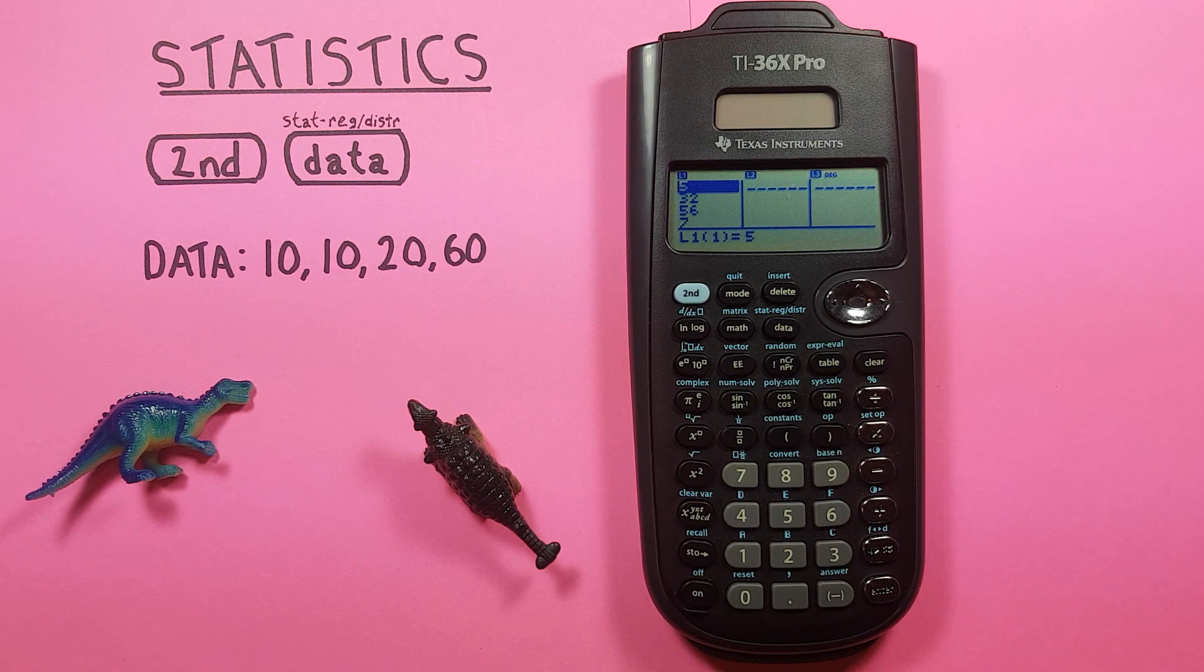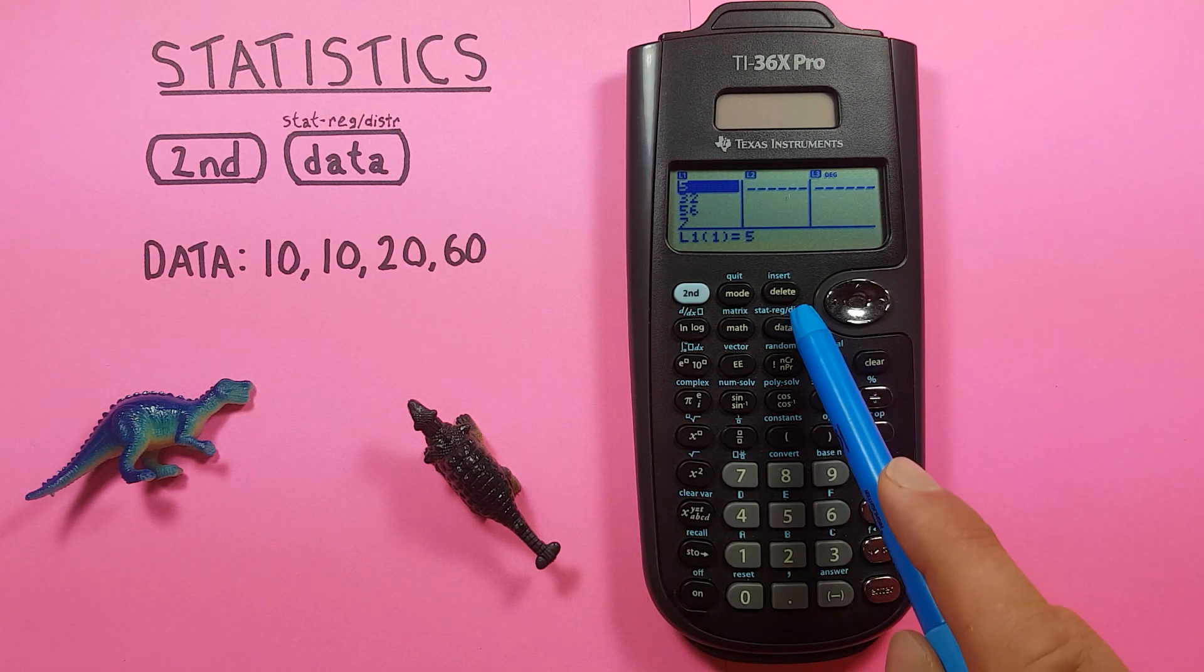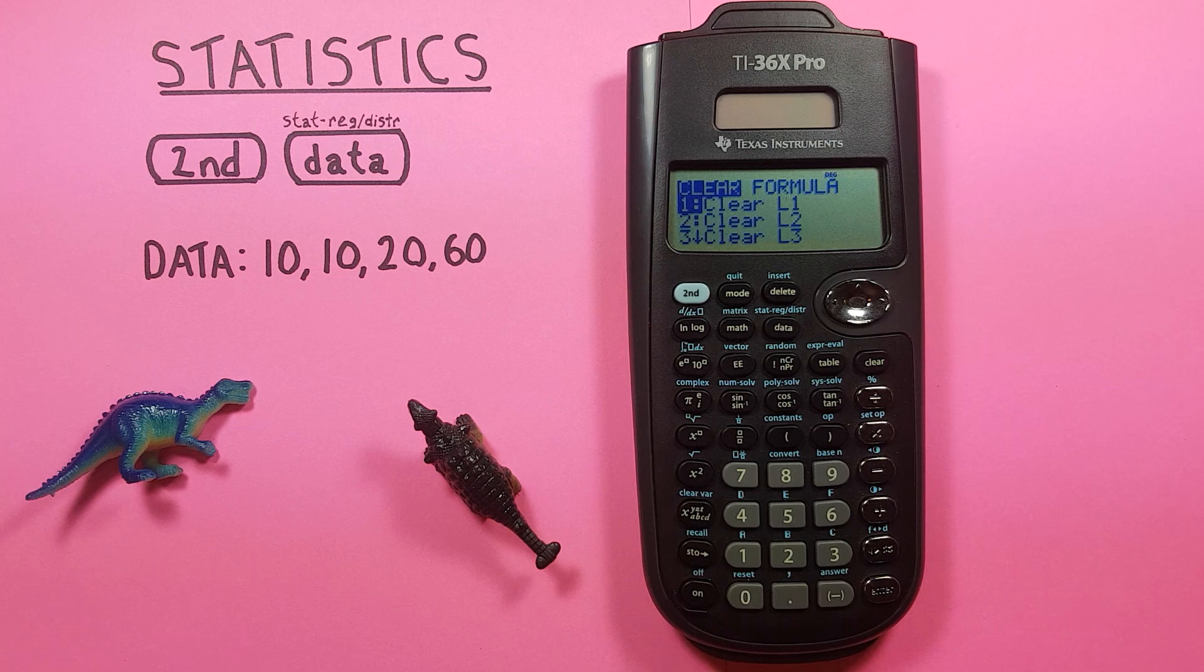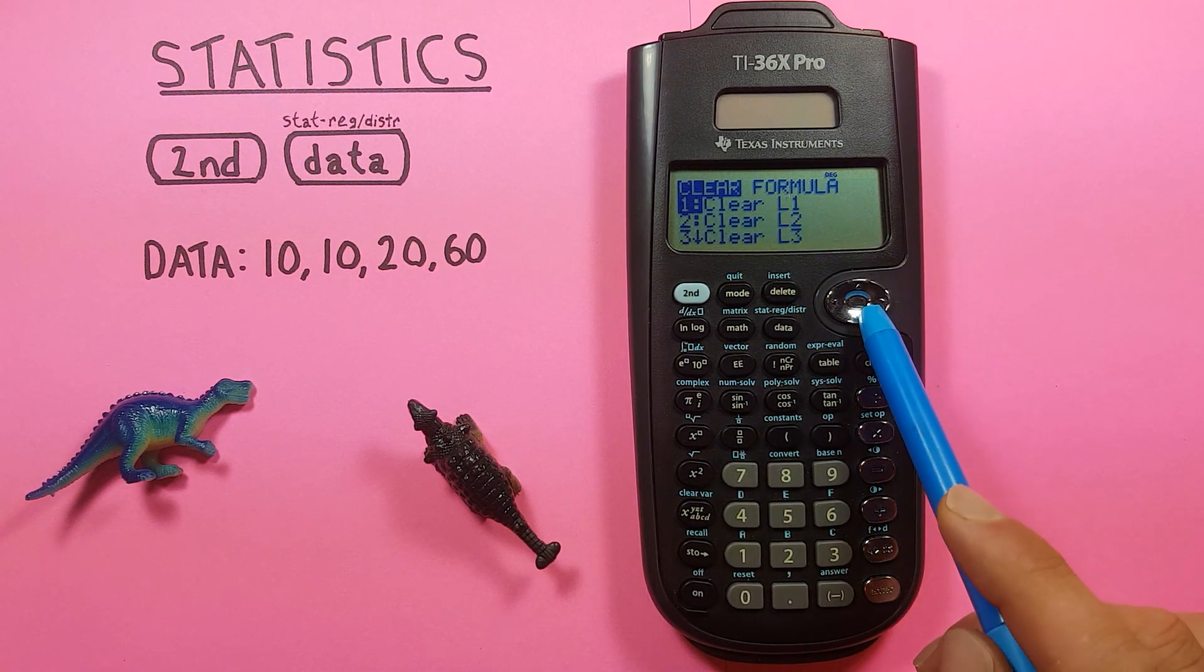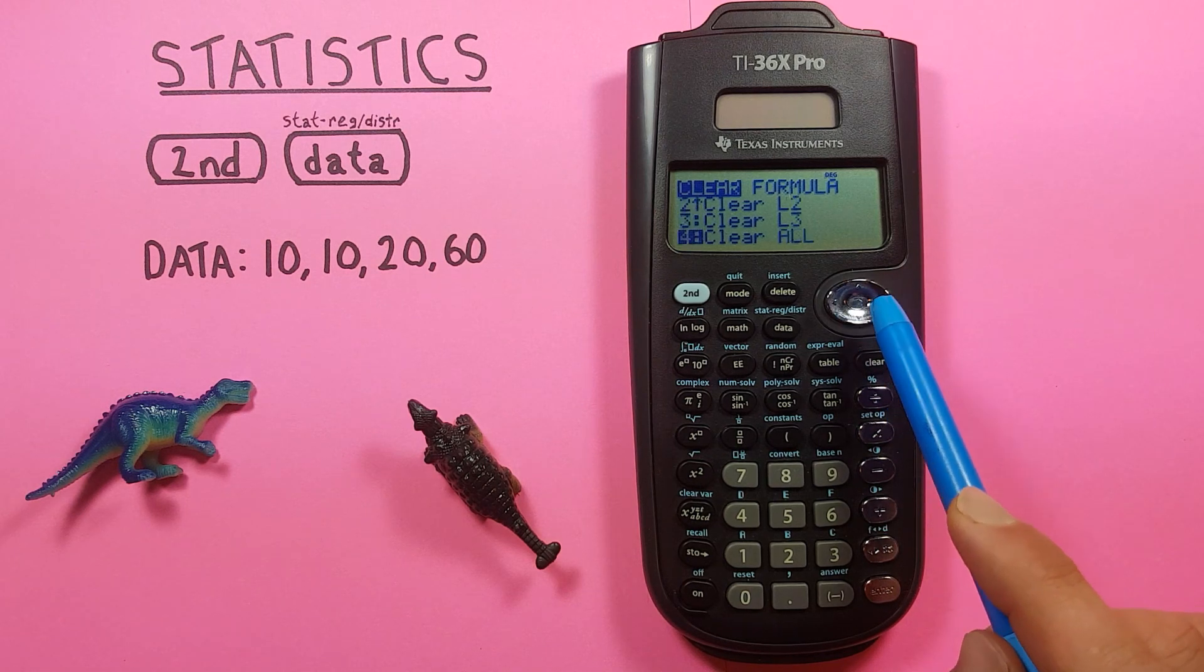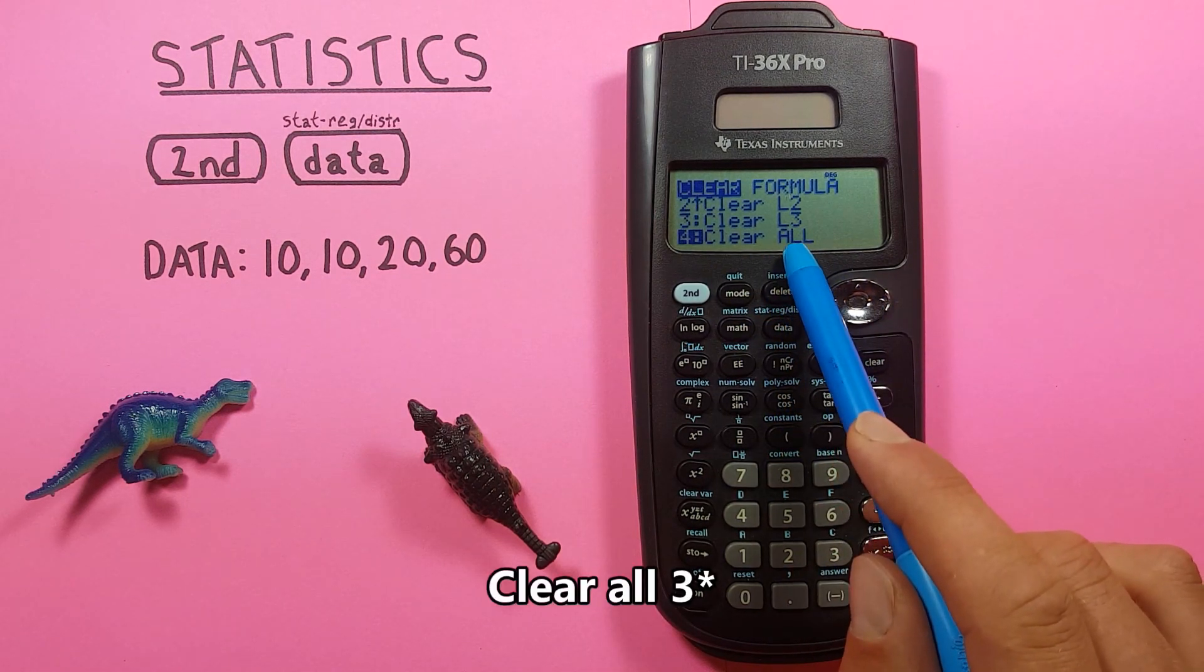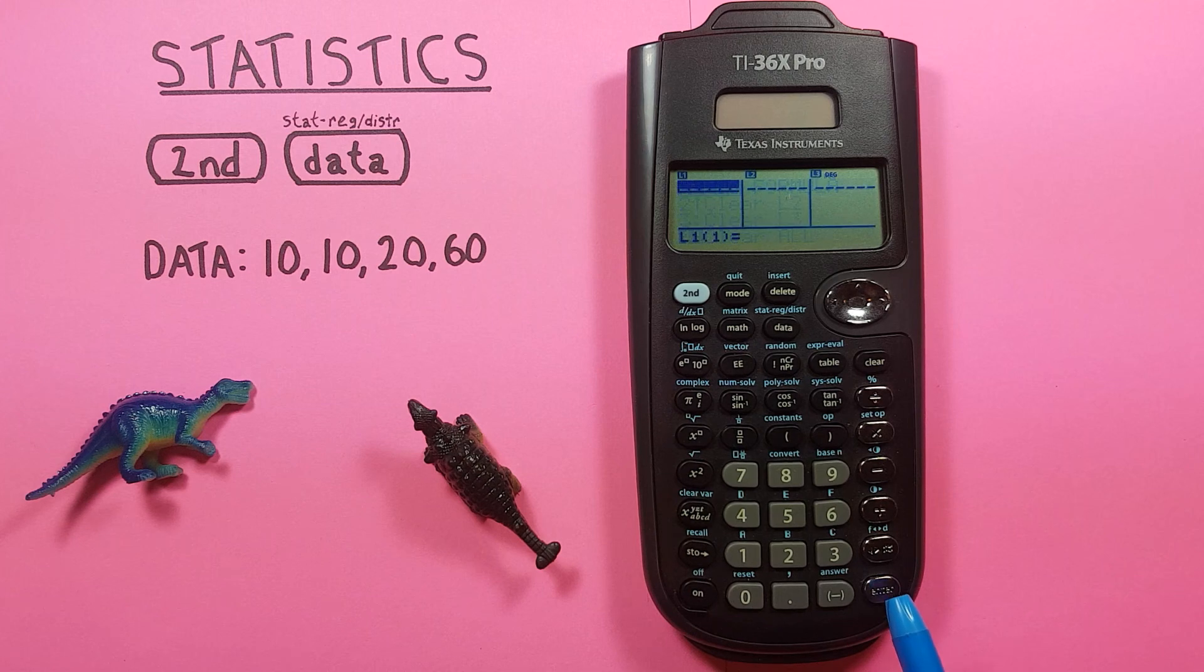Now you can see there's already some data entered into list one which we want to use, so to clear that we can press data one more time to bring up this menu here. You can see we have the options to clear list one, two, three, and if we scroll down we can clear all four. So we press enter there and see our list has now been cleared.